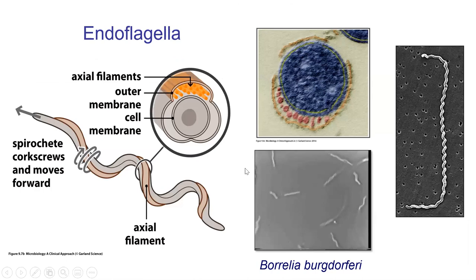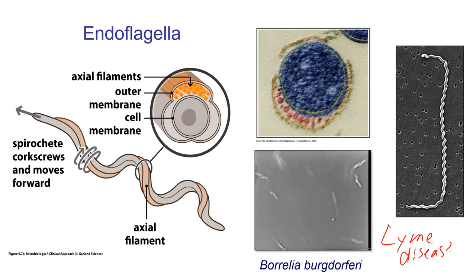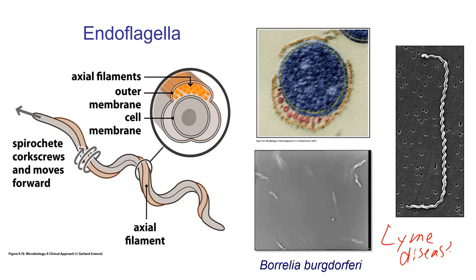One more side note about flagella — there are things called endoflagella. 'Endo' means in. These flagella are actually in the periplasm between the two membranes in gram-negative organisms. Rather than the flagellum spinning around, the entire organism corkscrews through the environment. One of those corkscrew organisms causes Lyme disease — you may have heard of it — which is spread by ticks and is spreading across Canada.